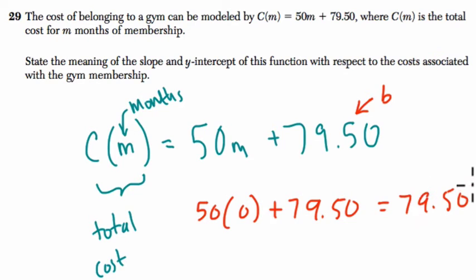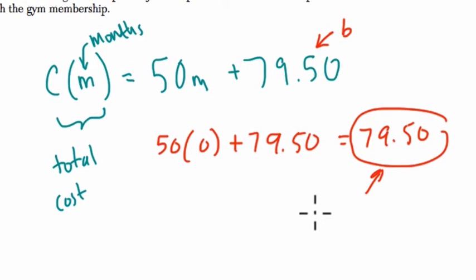This must be the cost even before you have any months. So this is like the starting cost or the membership cost, maybe per year, to get in. We don't know if it's every year, but we know it's the cost to get into the gym. So maybe like just to be a member, you have to pay 79.50.